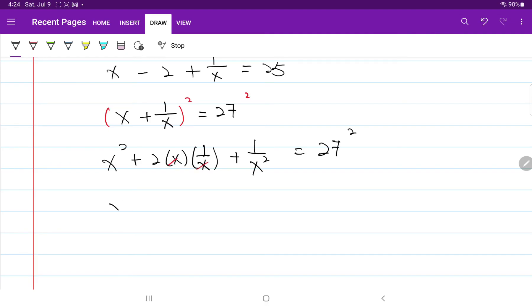So now we have x squared plus 1 over x squared plus 2 is equal to 729. Rearranging the equation by moving 2 to the right-hand side, we have x squared plus 1 over x squared equals 727.